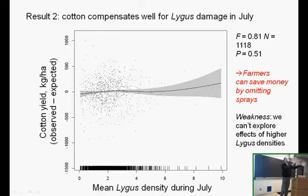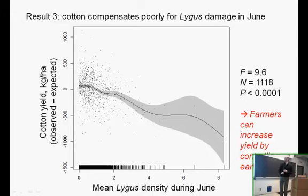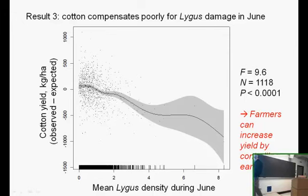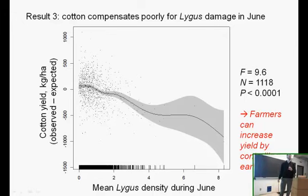Moving one month earlier to the month of June, what we see is maybe more surprising and quite different: a very clear negative effect of Lygus density on yield, at densities that are much lower than those the experiments identified as problematic. The experiments said we have to be out at high densities before we get a yield effect, but here we're seeing clear drops in yield even for painfully low densities of Lygus. The farmers were actually incurring yield loss without knowing it all of these years — probably at least a billion dollars in lost yield over the 50 years that entomologists have been arguing about this.